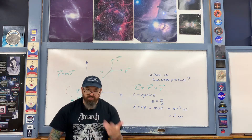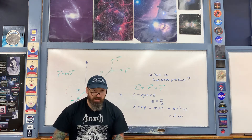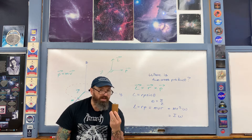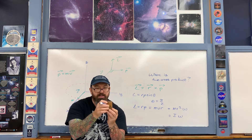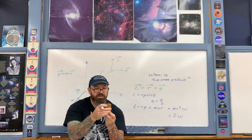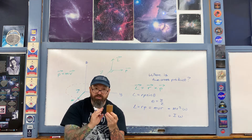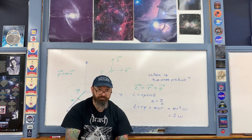But how does the cross product give us I omega for a distribution of matter — like this cylinder, for example, rotating like this? Let me take you through a short derivation that shows how we go from the cross product to a description of I omega as this cylinder is rotating.